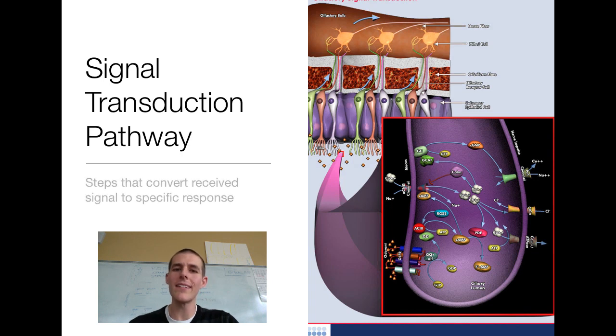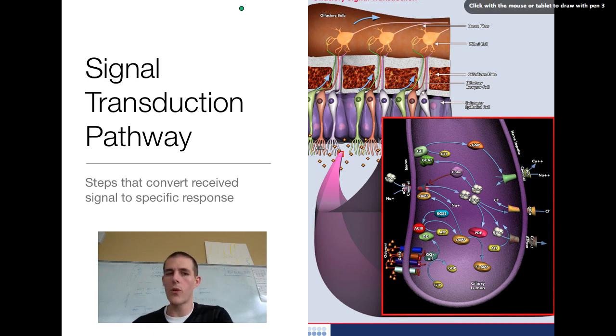Next term for you is a signal transduction pathway. Big words for the day. Let me see if I can make some notes for you. So all it is basically is the steps that convert a received signal to a specific response. We got a cell here. It looks like it is a cell that helps you to smell things. So here's your steps. Right here, that is our smell molecule.